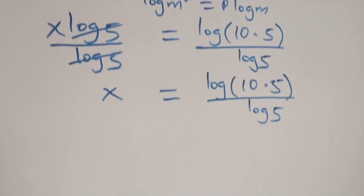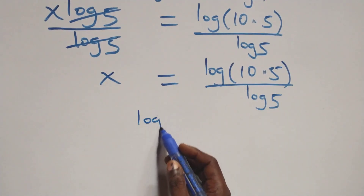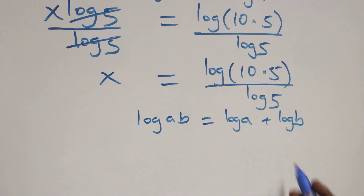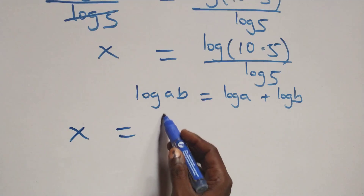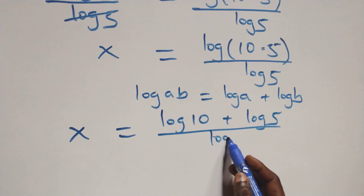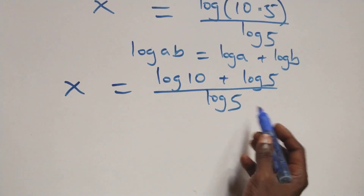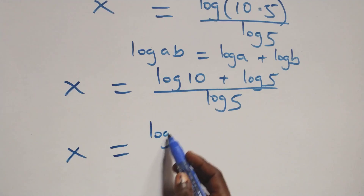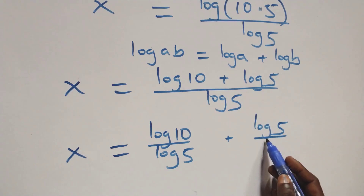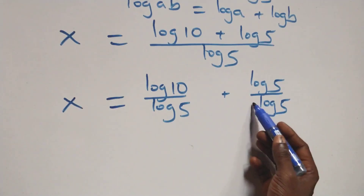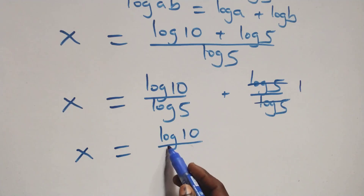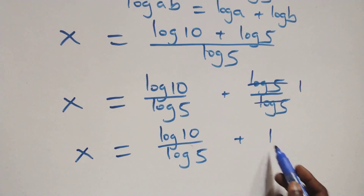Now we apply the logarithm product rule: log(a times b) equals log a plus log b. So x equals log(10 times 5) over log 5 becomes x equals (log 10 plus log 5) over log 5. Separating into two fractions: x equals log 10 over log 5 plus log 5 over log 5. Log 5 cancels in the second term, leaving 1.